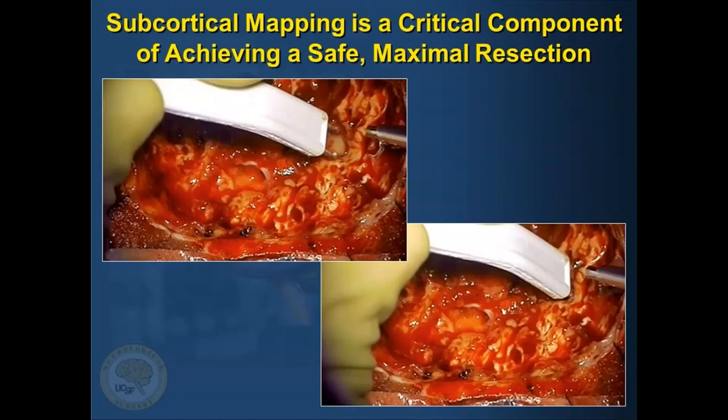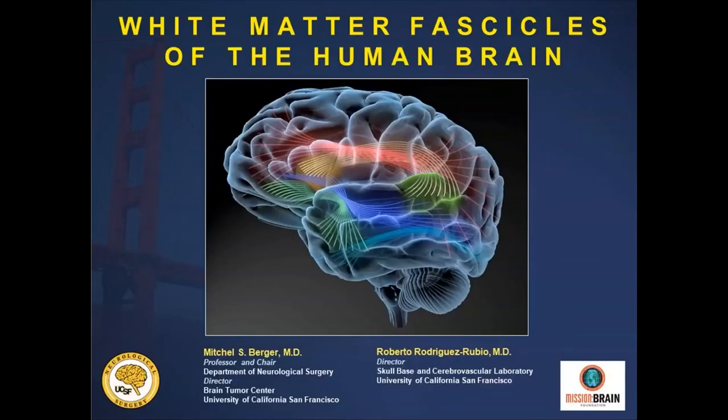We're not going to focus so much on the concept of cortical mapping, but we're going to talk about subcortical mapping, which I think is the most elegant part of this process. In doing this, I'm going to cover some aspects related to the motor system as well as the language pathways. Setting the stage for what you're going to hear, I'm just going to show you visually some of the tracks that we have to consider when doing this.